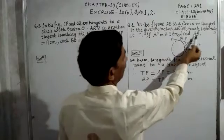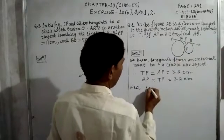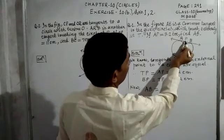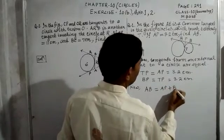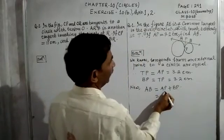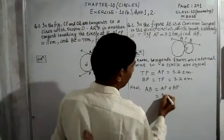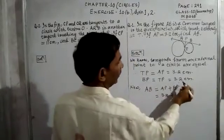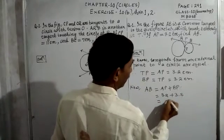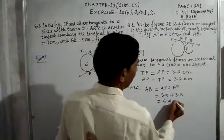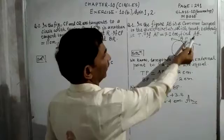The question asks us to find AB, so now: AB is equal to AP plus BP. The value of AP is 3.2 centimeters, and BP is also 3.2 centimeters. So AB equals 3.2 plus 3.2, which equals 6.4 centimeters. That is the answer.